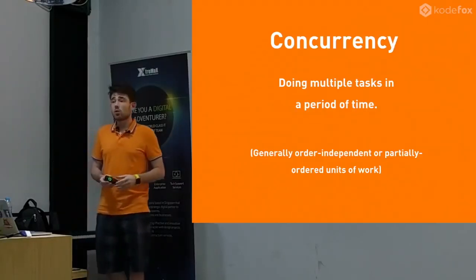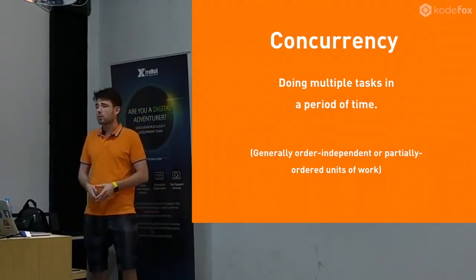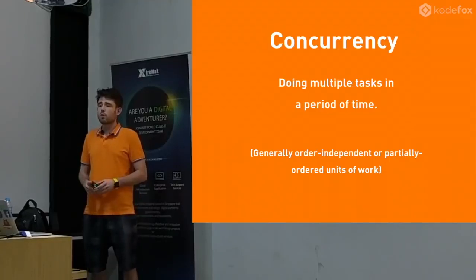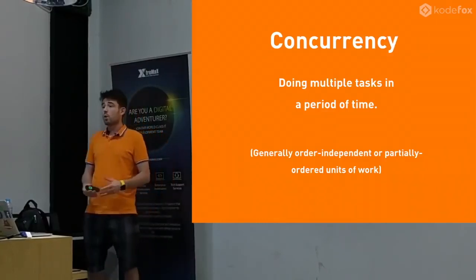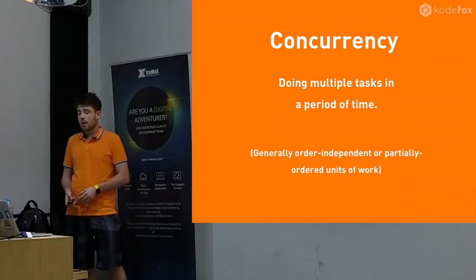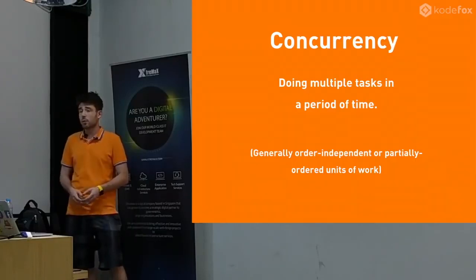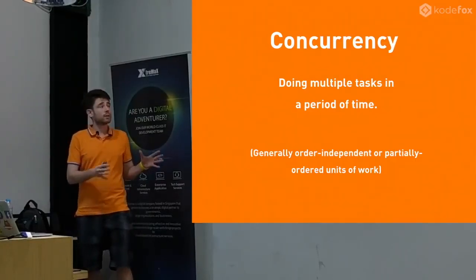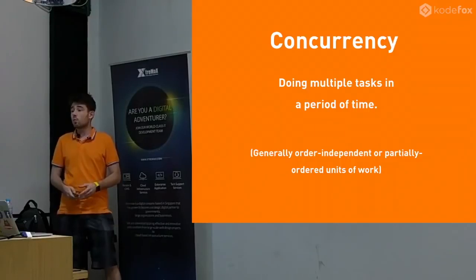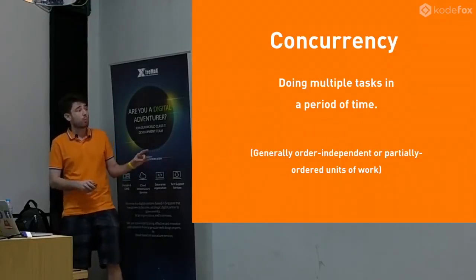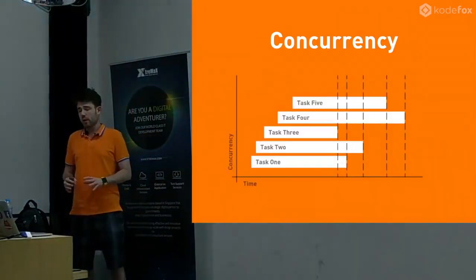So let's talk about what is concurrency. Concurrency is doing multiple tasks in a period of time. Typically one core can only do one thing at once, and other pieces of hardware can only do a single thing at a time. But over a stretch of time, we want to do multiple things. So a web server wants to serve multiple requests for a web page. What we're really talking about is order-independent or partially ordered units of work.